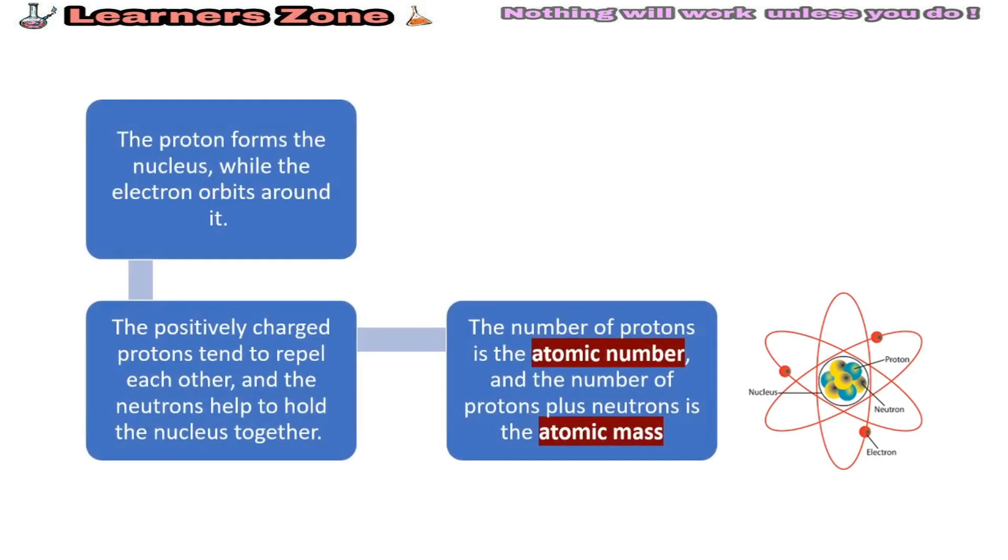The protons form the nucleus while the electrons orbit around it. The positively charged protons tend to repel each other and the neutrons help to hold the nucleus together. The number of protons is the atomic number and the number of protons plus neutrons is the atomic mass.